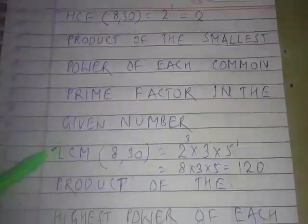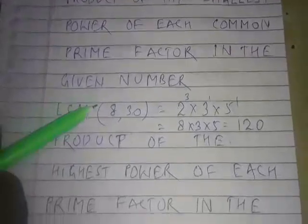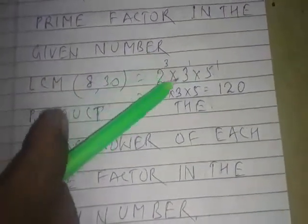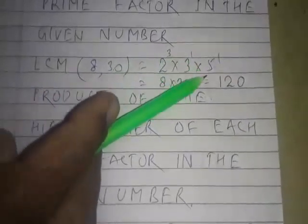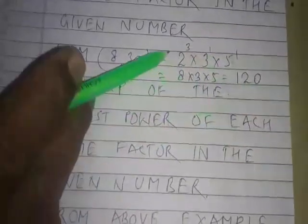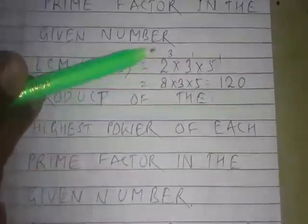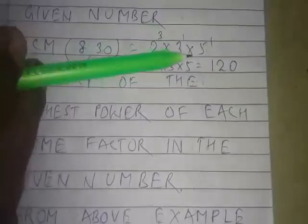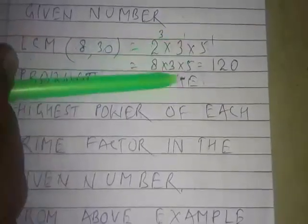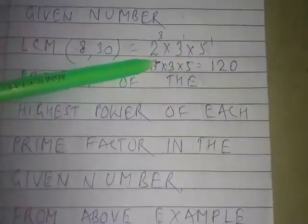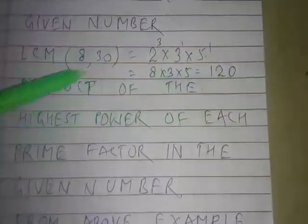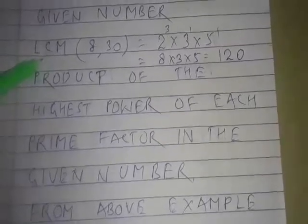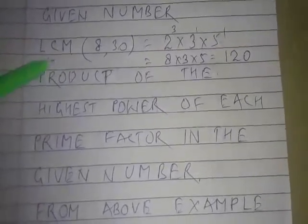Now for LCM: LCM of 8 and 30 = 2³ × 3¹ × 5¹. Here 2³ gives 8, 3¹ gives 3, and 5¹ gives 5. The product of all three is equal to 120.